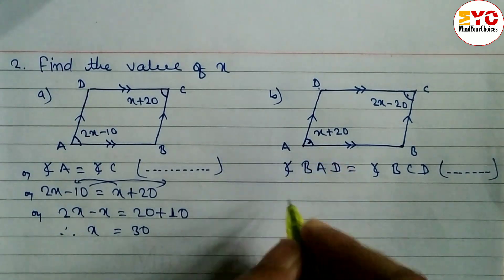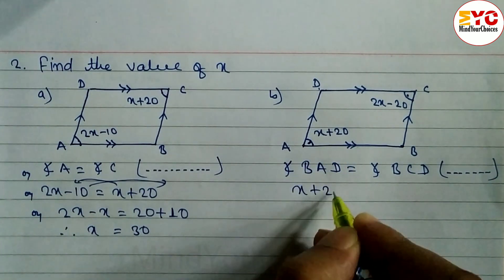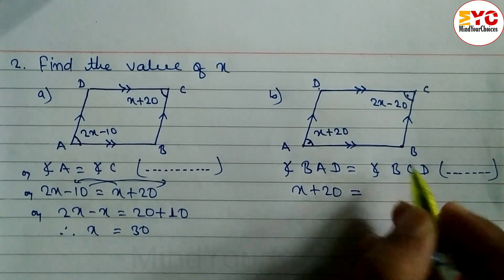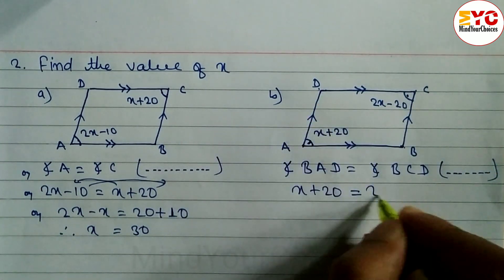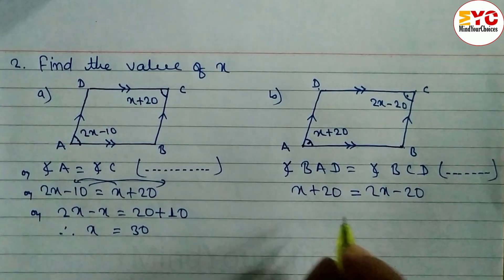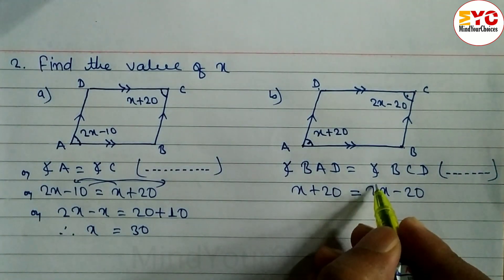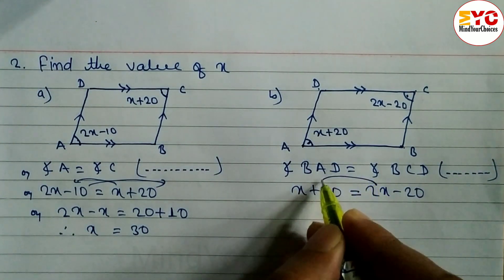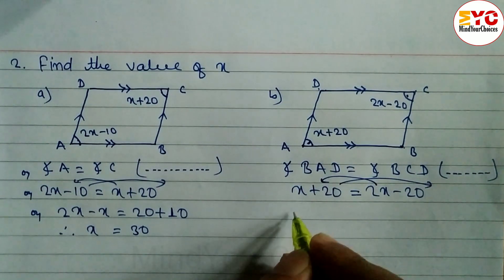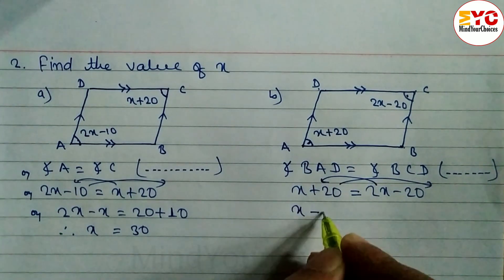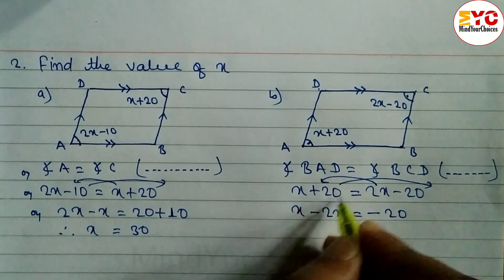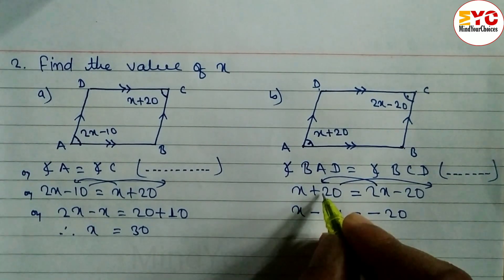What is the value of BAD? BAD is equal to x plus 20, so we write x plus 20. BCD is equal to 2x minus 20. After this we have to find out the value of x. So we take x terms on one side: x minus 2x is equal to minus 20 minus 20.